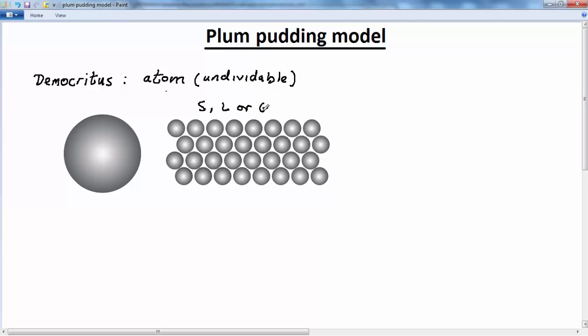This idea was pretty much held right through to the times of Dalton. Dalton held by this idea, although he realized that each of the elements had their own particular atom. So each element was made of its own undividable atom. That's to say, oxygen had its own atom, sodium had its own atom, nitrogen had its own atom, etc. So this idea that everything around us is made of this undividable particle held pretty much to the end of the 19th century.